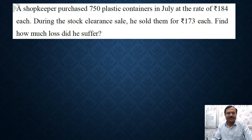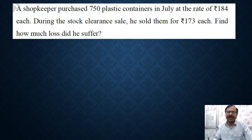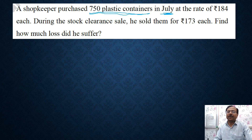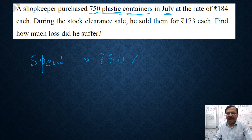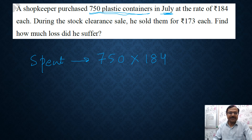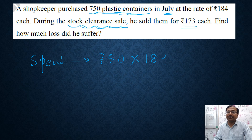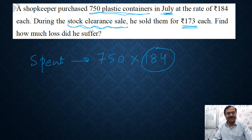Here is another question from the practice PDF. A shopkeeper purchased 750 plastic containers in July at the rate of Rs. 184 each. Due to stock clearance, he sold them at Rs. 173 each. That means he is incurring a loss, because he purchased them for 184 and sold them for 173. We need to find the total loss he suffered.